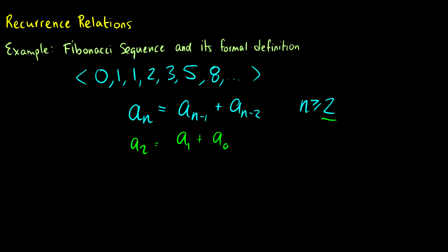We need those two. So we'll start off the sequence by saying that a_0 is equal to 0 and a_1 is equal to 1. And that is the formal definition of the Fibonacci sequence.